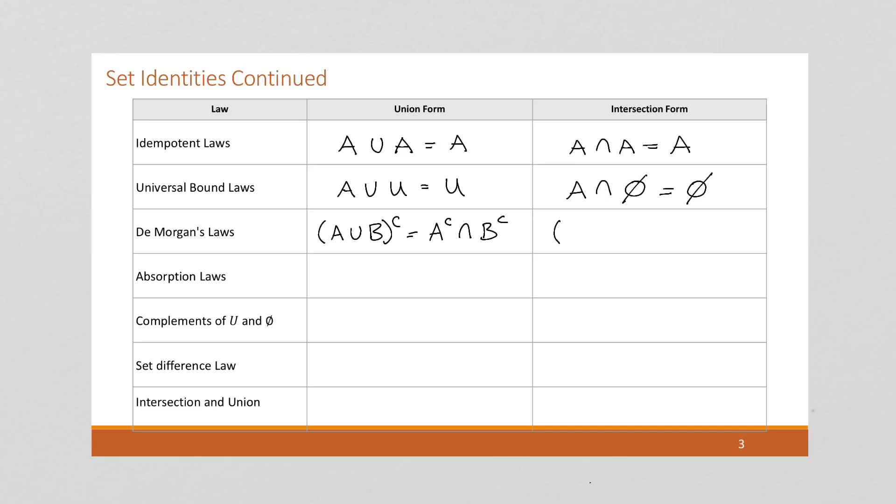Here, if we have A intersect B complement, this is going to be the same as A complement union B complement. The operation changes when we distribute that complement.